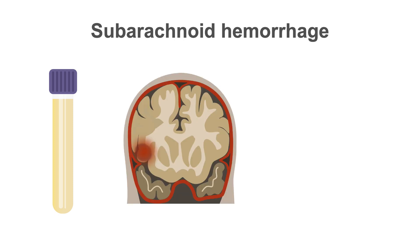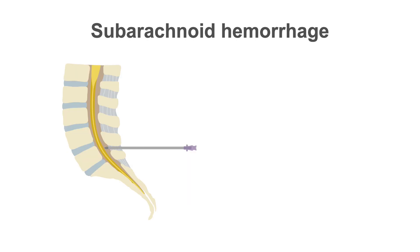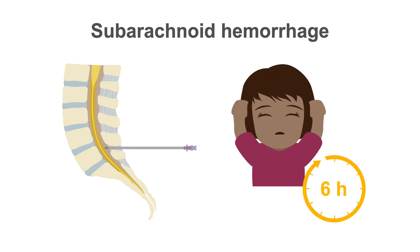Xanthochromia is often used in the diagnosis of subarachnoid hemorrhage, since it can be detected as soon as two to four hours after red blood cells have entered the subarachnoid space. This means that as long as the lumbar puncture is performed at least six hours after the onset of the headache, the presence of xanthochromia is likely due to a subarachnoid hemorrhage.